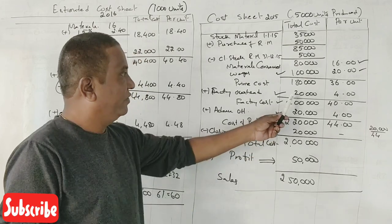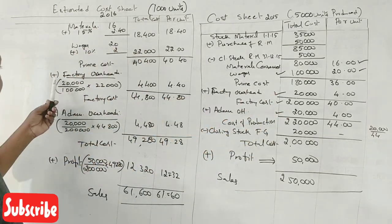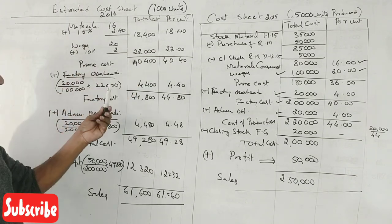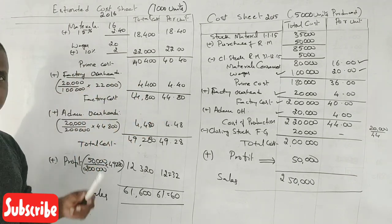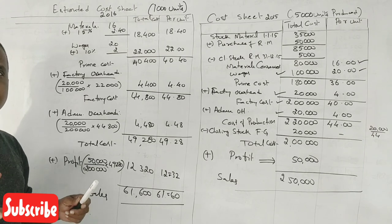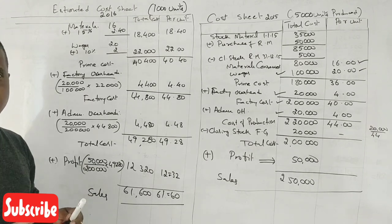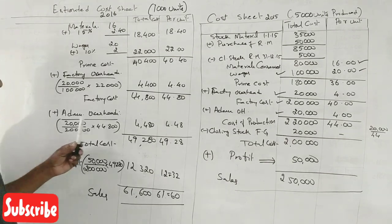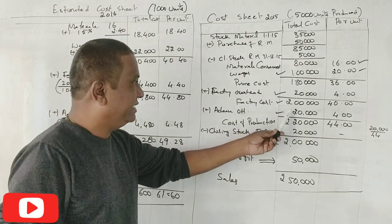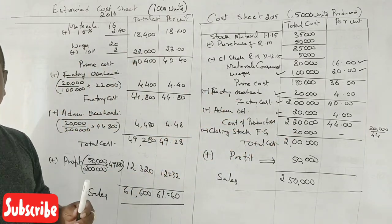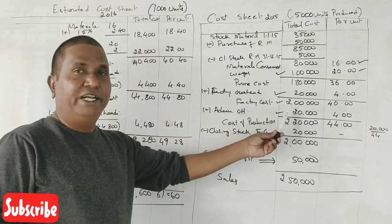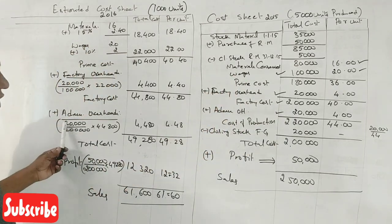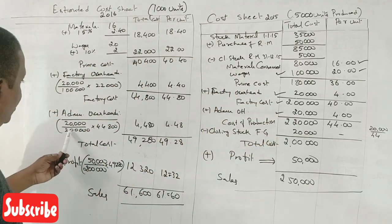Always remember: factory overhead is calculated on the basis of wages, and administration overhead is calculated on the basis of factory cost. Factory overhead: ₹20,000 divided by ₹1,00,000 wages; apply the same ratio to the current year wages of ₹22,000.